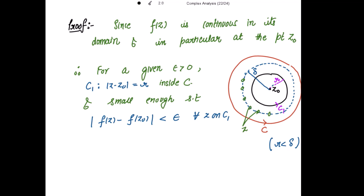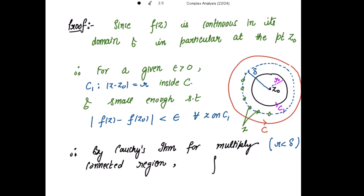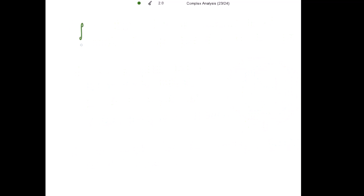Now let's use Cauchy's theorem for a multiply connected region. By Cauchy's theorem for a multiply connected region, we know that the integral over C minus C1 is equal to 0. That means the integral over C equals the integral over C1. So the integral over C of f(z) divided by (z minus z0) dz is equal to the integral over C1.